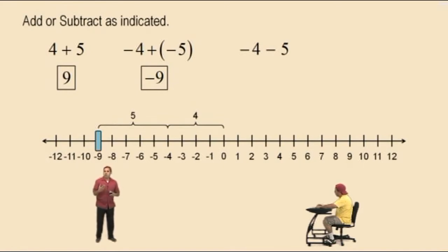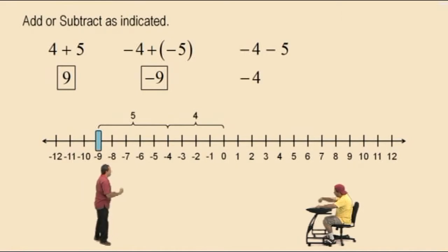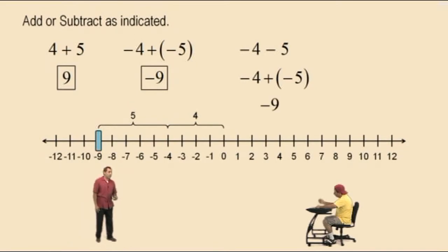Some of you use the definition of subtraction, which says subtracting 5 is the same as adding a negative 5. So some of you will go ahead and rewrite it as negative 4 plus a negative 5 — it's the same as before, and the answer is negative 9.